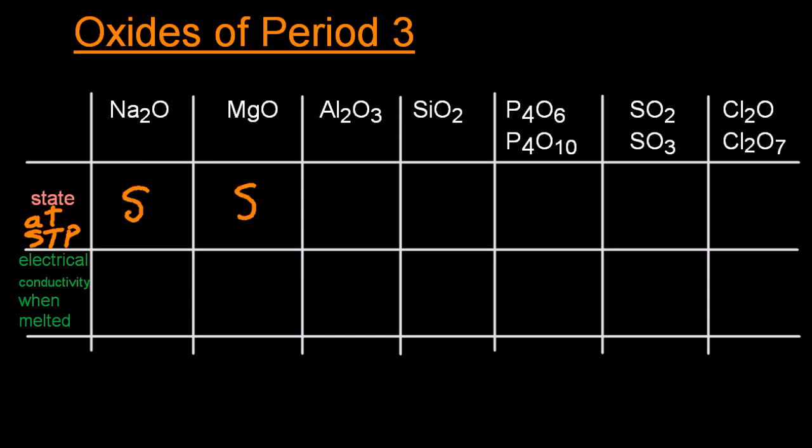If they're solids, that implies strong bonds, and that would be ionic bonding. Sodium, magnesium, aluminium are all metals, oxygen's a non-metal, so it's going to be ionic bonding.